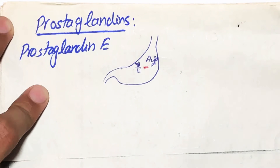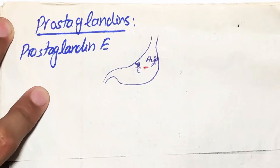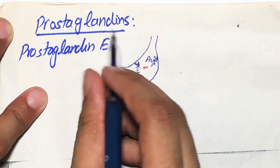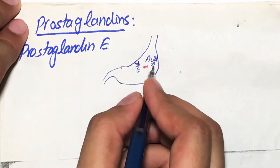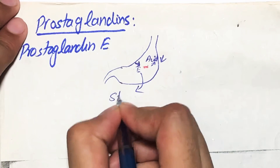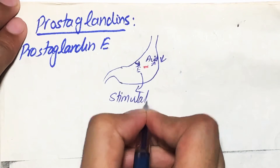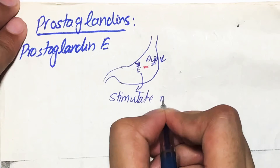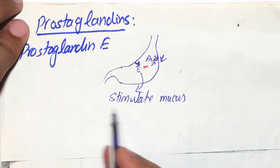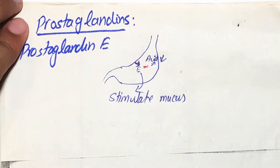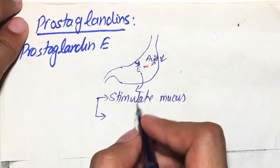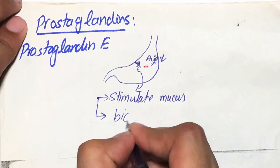If you want to have less acid inside your stomach, what you need is prostaglandin. Not only does a decrease in concentration of acid happen, but prostaglandins also stimulate mucus, which will protect the stomach lining from being damaged by the acid. Prostaglandins also secrete some bicarbonates.